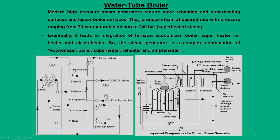Looking at the thermal circuit for a modern steam generator: we have a steam drum where saturated steam is generated and it goes to the superheated unit, which we discussed in our last class. In today's lecture we will be mainly focusing on the important heat exchanger components — reheater, economizers, and air preheaters. We see in the simplified circuit diagram that these units are placed in sequence: economizer, steam drum, superheater, then reheater.